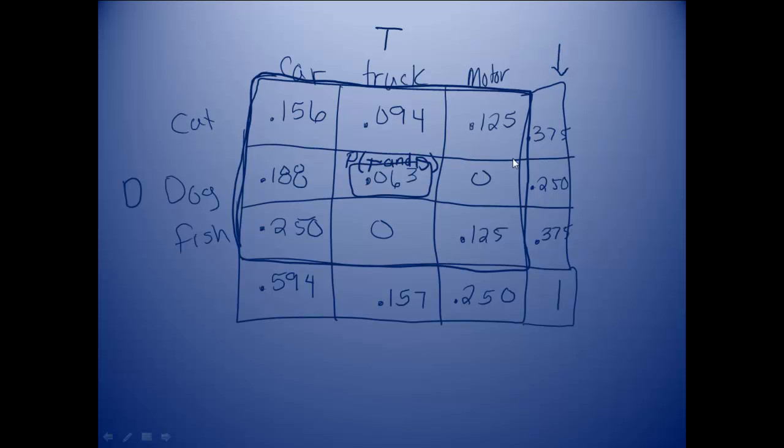The cells on the outside, these are called our marginal probabilities. And they are individual probabilities. So this 0.594 right here would be what's the probability of selecting somebody with a car. Because this is only the car column. This 0.157 would be what's the probability of selecting somebody with a truck. And so on and so on.